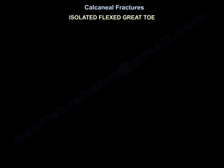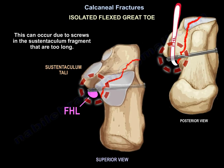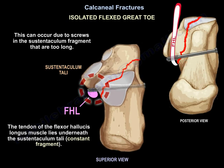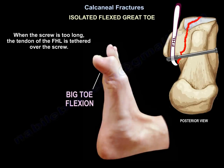There is another entity called isolated flexed great toe, which can occur from screws placed into the sustentacular fragment that are too long. The tendon of the flexor hallucis longus lies underneath the sustentaculum tali — the sustentaculum tali is called the constant fragment. When the screws are too long, the tendon of the flexor hallucis longus is tethered over the screw.